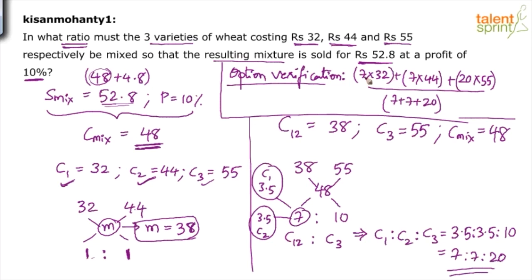Check this now. 7 into 32 is 224. 7 into 44 is 308. And 20 into 55 is 1100. So 1100 plus 308 plus 224 equals 1632. Overall numerator is 1632. 1632 divided by what is the denominator? 7 plus 7, 14 plus 20, 34. 1632 divided by 34.